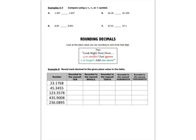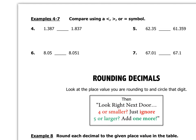Let's practice comparing decimals without drawing grids. For number 4: 1.387 versus 1.837. The whole number digits are both 1 — same. In the tenths place, I have 3 versus 8. Since 8 is larger than 3, that means 1.837 is larger, so 1.387 is less than 1.837. Number 5: 62.35 compared to 61.359. The whole number parts are different — 62 versus 61 — so I can use a greater than sign since 62 is greater than 61.